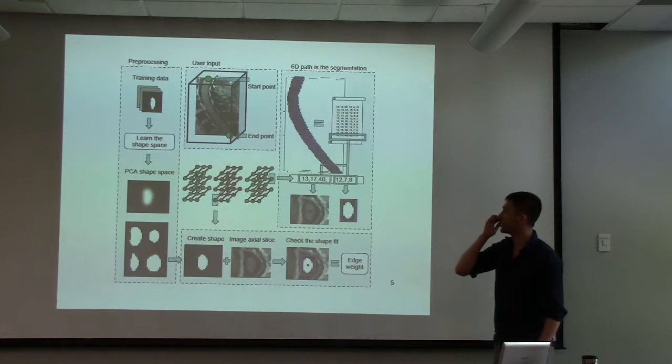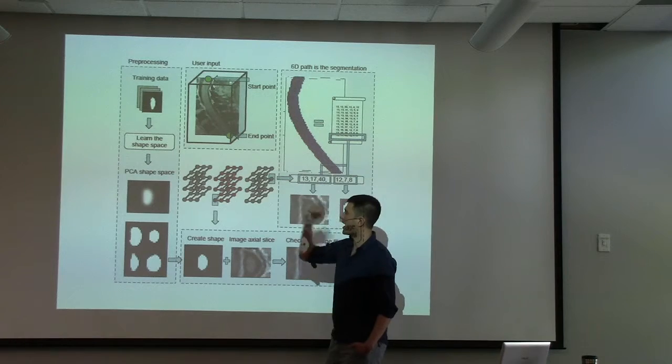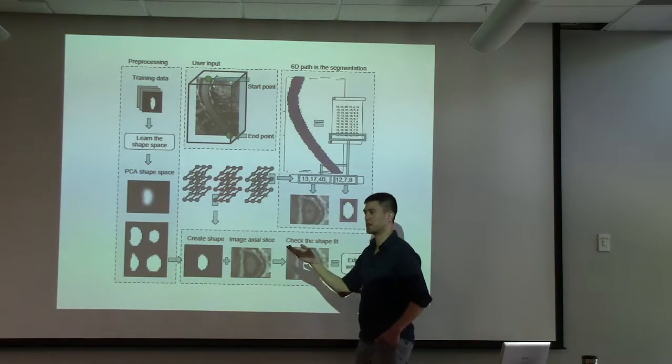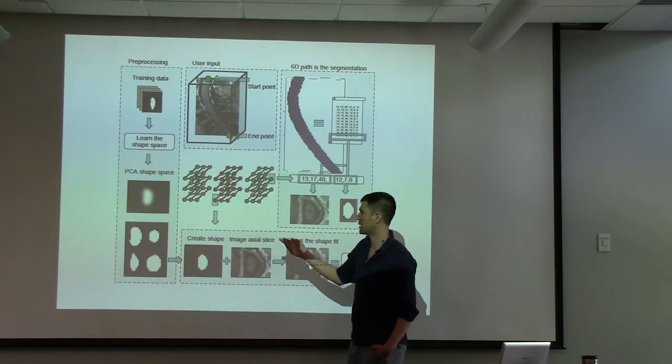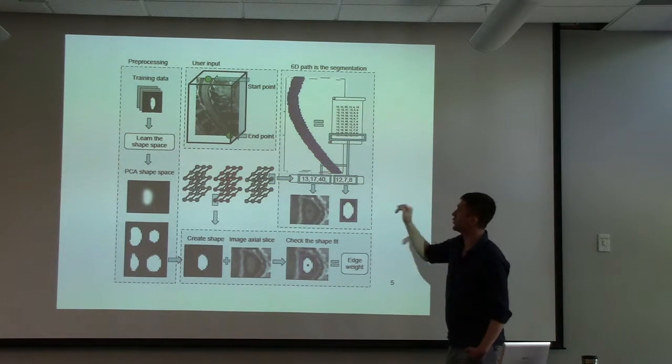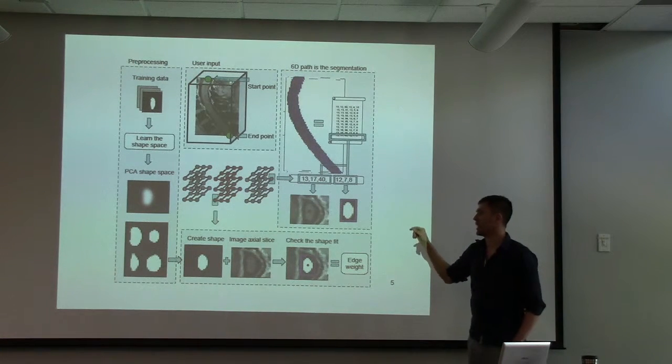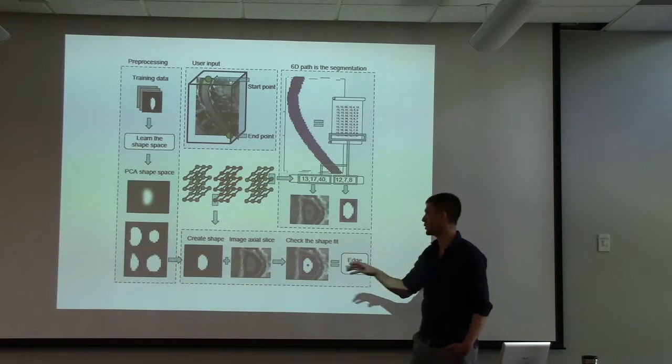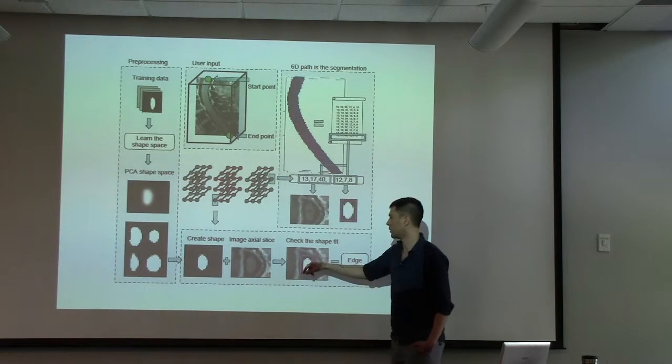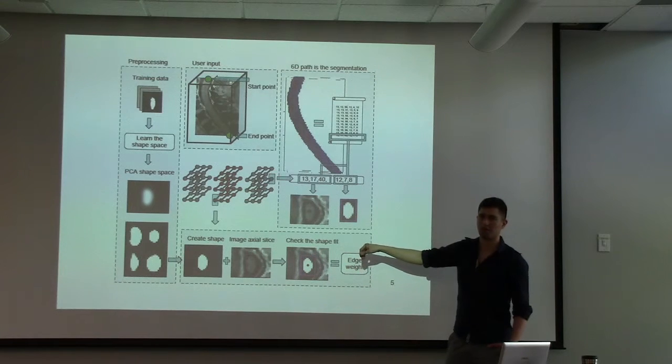So I'll give you an overview of the pipeline. We start out by having training data which is humans gone through and marked out where the spinal cord is. We use PCA to learn the shape space and we can make different axial slices that look like that. And then at runtime a user would enter a start point and endpoint, and starting from the starting point we would create a shape and then we would check how well it fits the image data and then get a score based on how well that shape fits the image data at that location. That score then becomes essentially the edge weight.